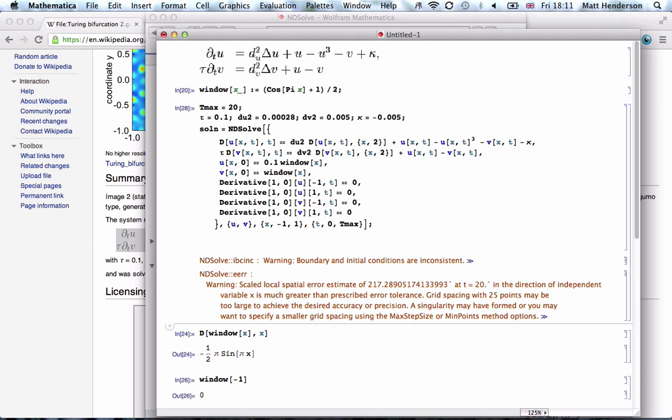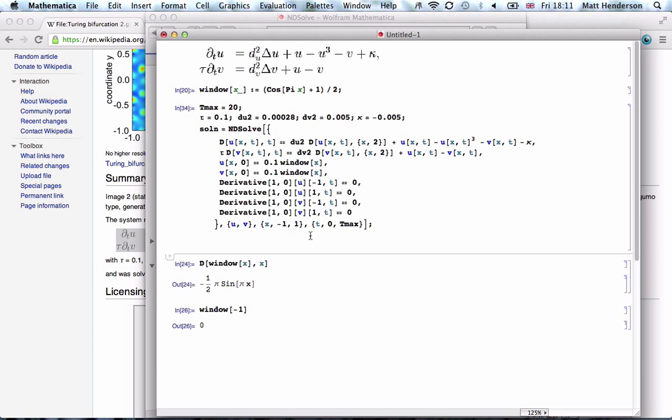That changed it. Okay. Hmm, maybe it's a bug. So now we have this solution and we should try and plot it, see what it looks like. So if we do u x t and substitute in the solution we get that, okay.